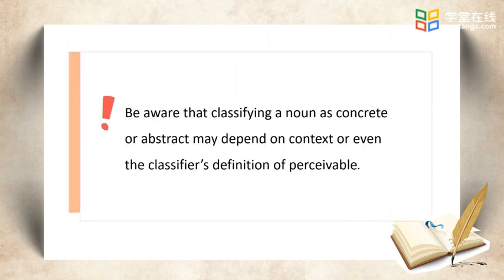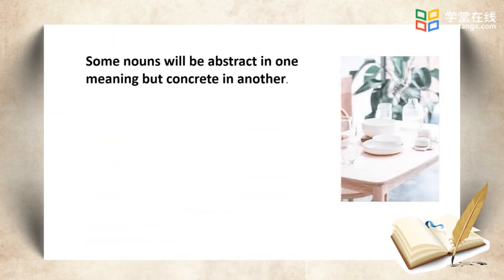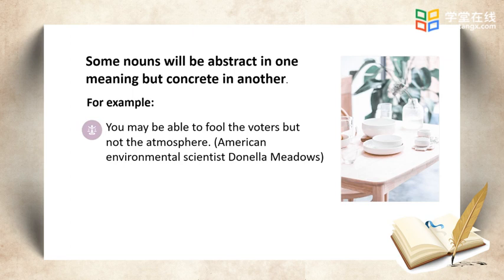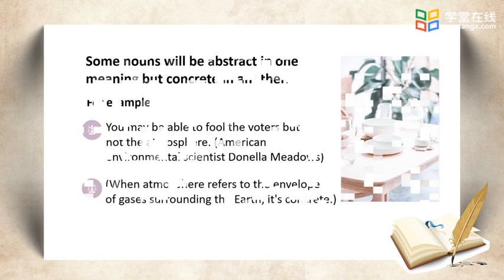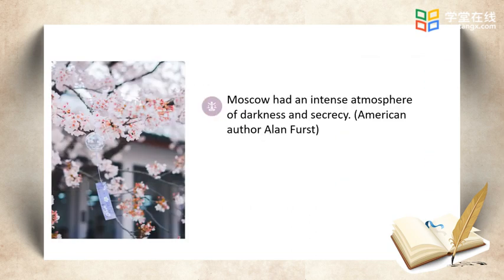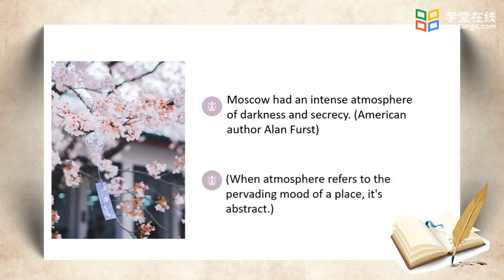Beware that clarifying a noun as concrete or abstract may depend on context or even the classifier's definition of perceivable. Some nouns will be abstract in one meaning but concrete in another. For example: 'You may be able to fool the waters but not the atmosphere' — when atmosphere refers to the envelope of gases surrounding the earth, it's concrete. But 'Moscow had an intense atmosphere of darkness and secrecy' — when atmosphere refers to the pervading mood of a place, it's abstract.